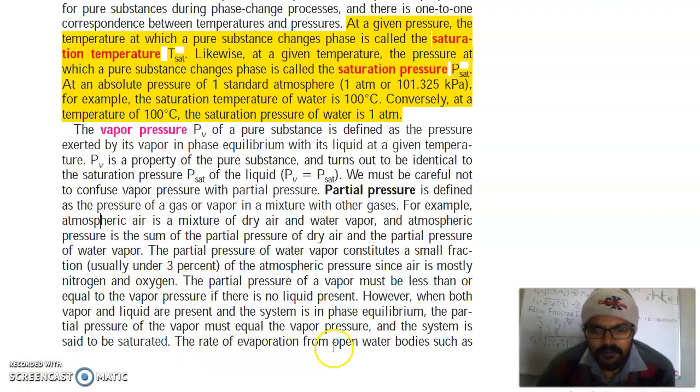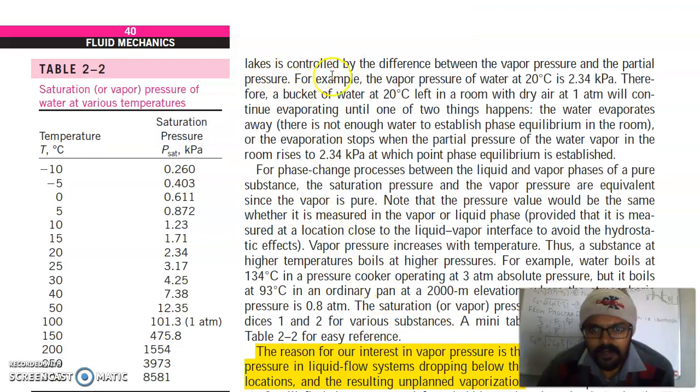The rate of evaporation from open water bodies such as lakes is controlled by the difference between the vapor pressure and the partial pressure. For example, the vapor pressure of water at 20 degrees Celsius is 2.34 kilopascals. Therefore, a bucket of water at 20 degrees Celsius left in a room with dry air at one atmosphere will continue evaporating until the water evaporates and the partial pressure of water vapor in the room rises to 2.34 kilopascals at which point phase equilibrium is established.